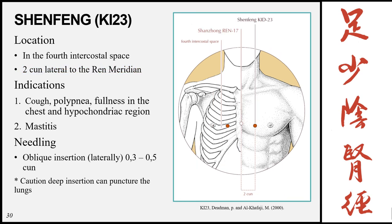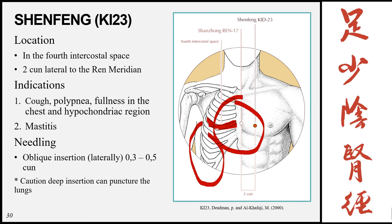Shenfeng, Kidney 23, is located in the 4th intercostal space, 2 cun lateral to the midline. Indications: cough, polypnea, fullness in the chest and hypochondriac regions, and mastitis. Needling: oblique insertion laterally 0.3 to 0.5 cun. Caution against deep, perpendicular, or deep oblique insertion as the lungs lie beneath this point.